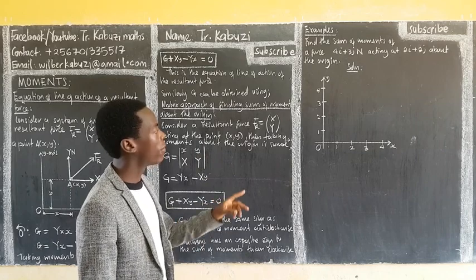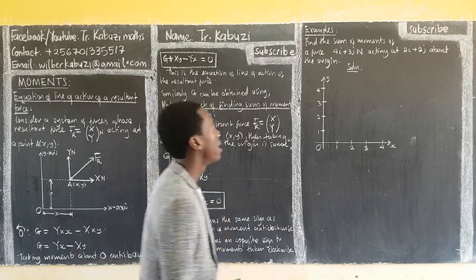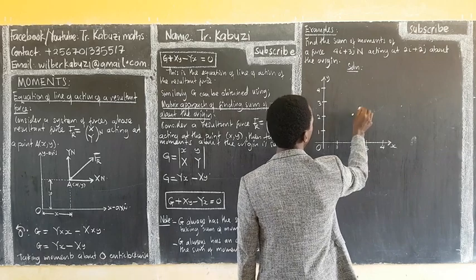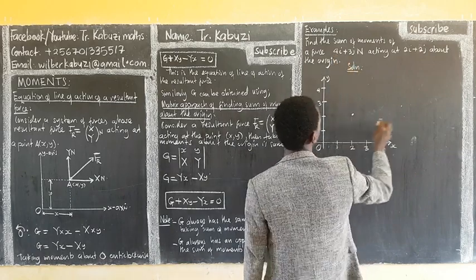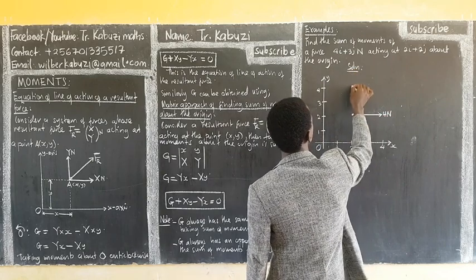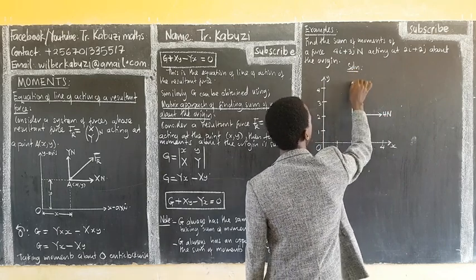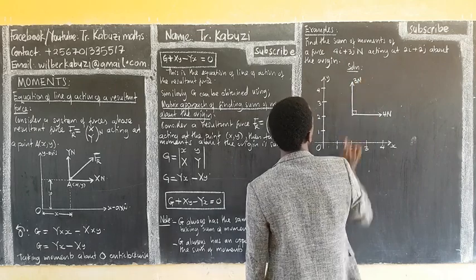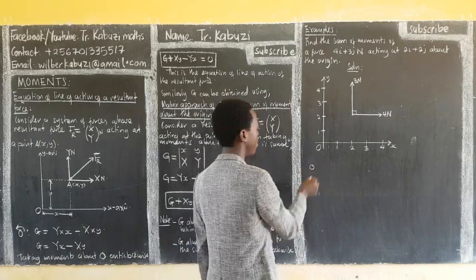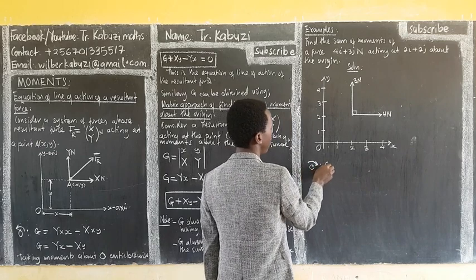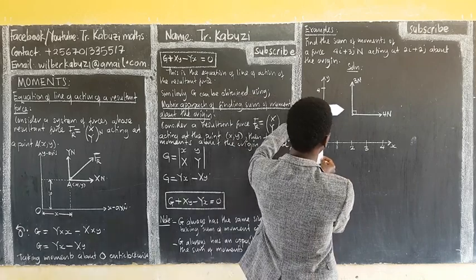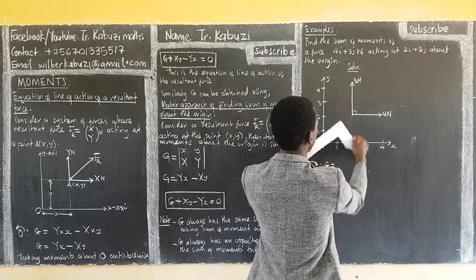I am going to first use the approach of using the axes. The force is acting at the point (2, 2). The x-component is 4, so it is 4 in the x-direction, and the y-component is 3. Taking moments clockwise: starting with the 4-force in the x-direction, you can see it is going to act clockwise.